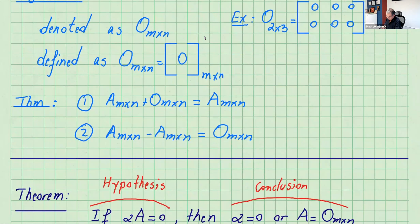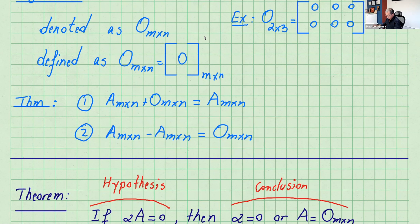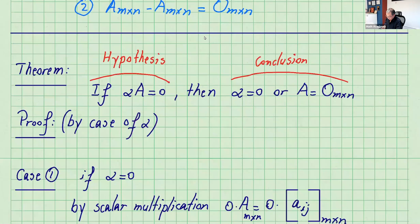If you take a matrix plus the zero matrix, you get the same matrix back. And if you subtract the same matrix from itself, you get the zero matrix — you subtract the entries and they're the same, so that's pretty straightforward.